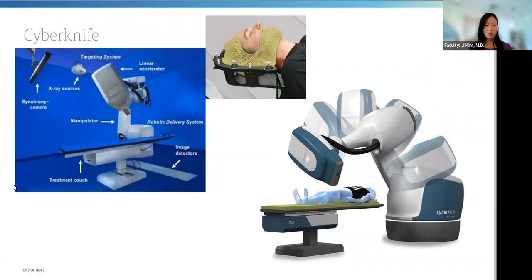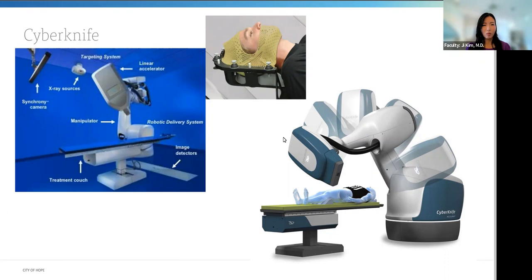Another machine often used for SRS is the CyberKnife — a LINAC on a robotic arm. Created as an alternative to Gamma Knife, without the need for a frame or cobalt-60. CyberKnife was invented at Stanford and first debuted in 1994, cleared to treat intracranial tumors in 1999, and tumors anywhere in the body in 2001. The original CyberKnife models used cone-based collimation, whereas the newest model uses MLC-based collimation and is much faster than previous versions.